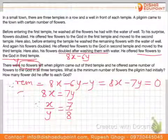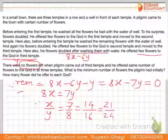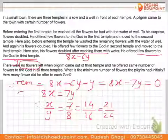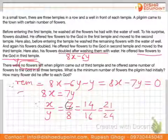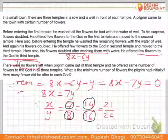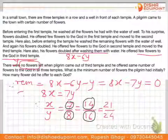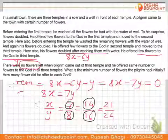From 8x = 7y, we get x/y = 7/8. The number of flowers cannot be negative or fractional, so the minimum integer solution is x = 7 and y = 8. The pilgrim started with 7 flowers and offered 8 flowers to the god in each temple.